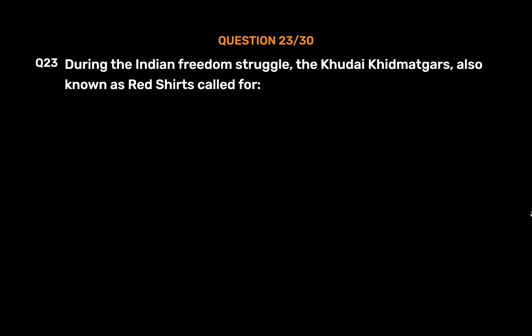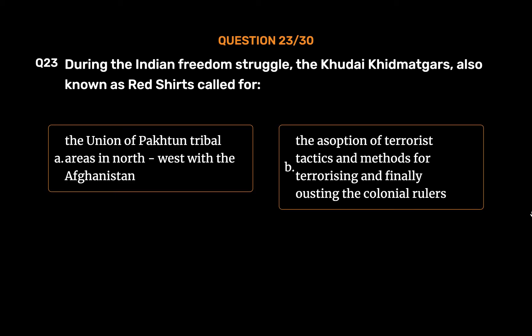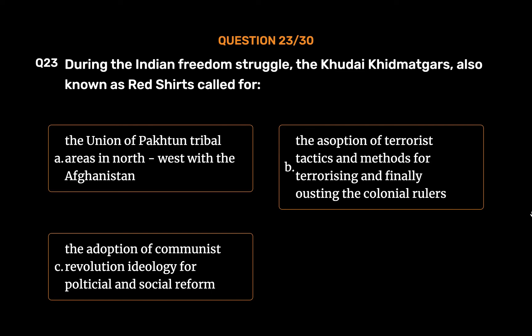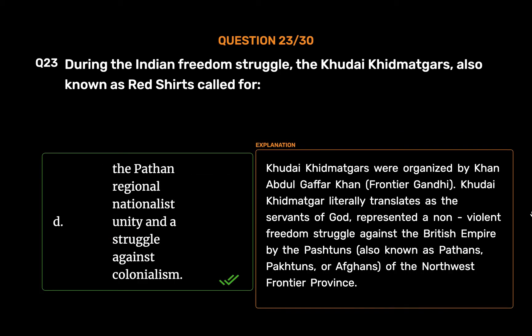Question No. 23. During the Indian freedom struggle, the Khudai Khidmatgar, also known as Red Shirts, called for: Option A: The union of Pakhtun tribal areas in the North-West with Afghanistan. Option B: The adoption of terrorist tactics for ousting the colonial rulers. Option C: The adoption of communist revolution ideology for political and social reform. Option D: Pathan regional nationalist unity and a struggle against colonialism. The correct answer is Option D. Khudai Khidmatgar were organized by Khan Abdul Ghaffar Khan, the Frontier Gandhi. Khudai Khidmatgar literally translates as the Servants of God, representing a non-violent freedom struggle against the British Empire by the Pashtuns of the Northwest Frontier Province.